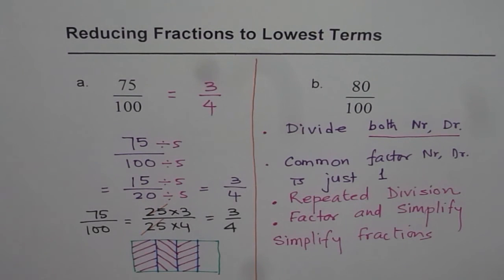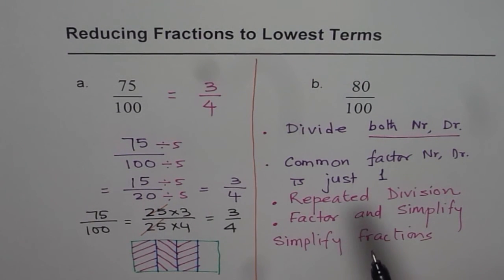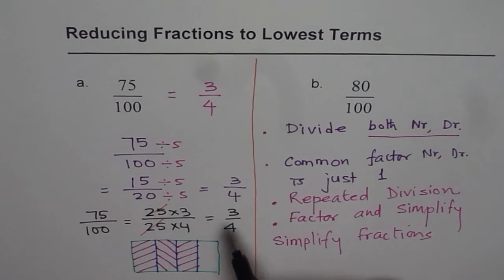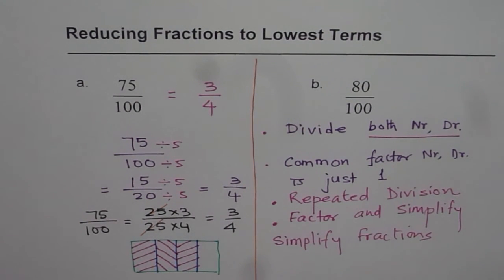Let's recap. What we have learned here is that when we say reducing fractions or simplify fractions to lowest terms, it really means that we have to divide numerator and denominator by their common factors until we get to a stage that the common factor between them is just one.